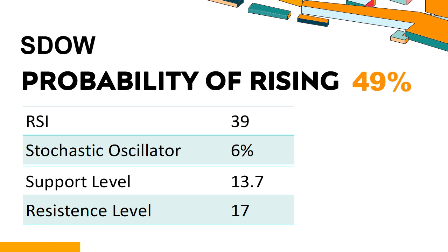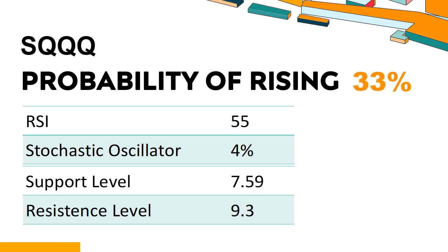Trend Outlook: SDOW has a 49% probability of rising stock price. When the probability of rising is lower than 50%, it means that the probability of falling is relatively high. Combining multiple technical analysis indicators, SDOW has 3 bullish signals and 4 bearish signals. SDOW's short-term support level is 14.5; if it falls below 14.5, it will have a chance to test 13.7. The short-term resistance level is 16.3; if it breaks through 16.3, it will look up to 17.